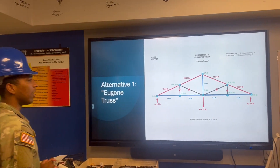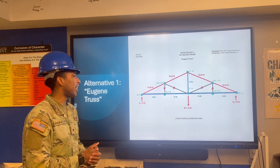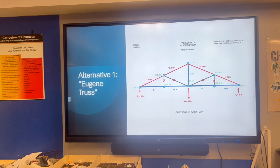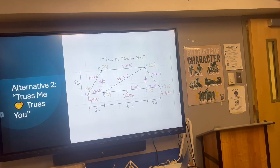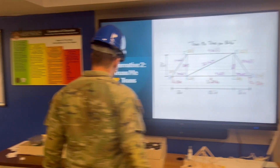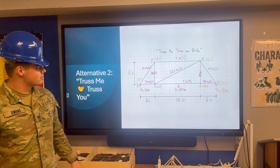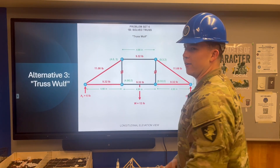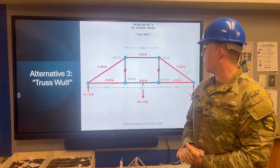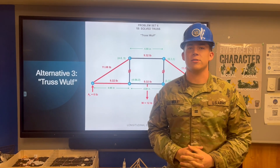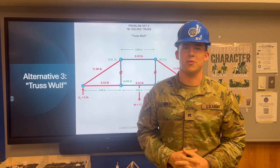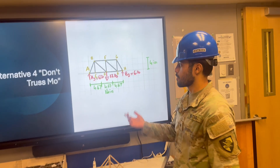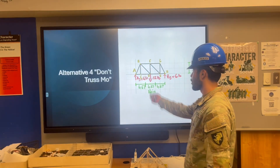My truss — I think it's really beautiful. I think it can hold a lot of weight, so I think we'll go with my truss. Here we got 'trust you, trust me' — it's my bridge, solid bridge, but not as good as Austin's. Third alternative, the Wolf truss — I did not complete any calculations past problem set seven, so we will probably not use mine. My truss — that's all I know how to do.